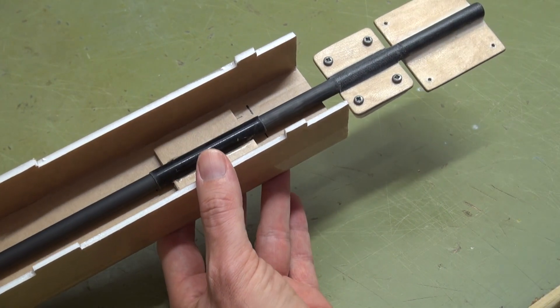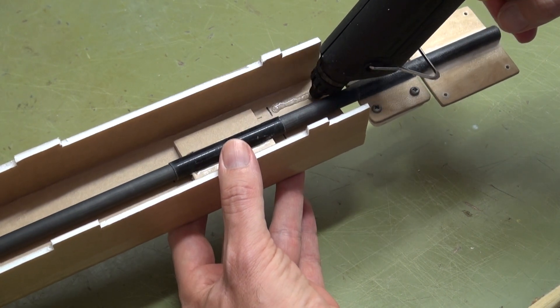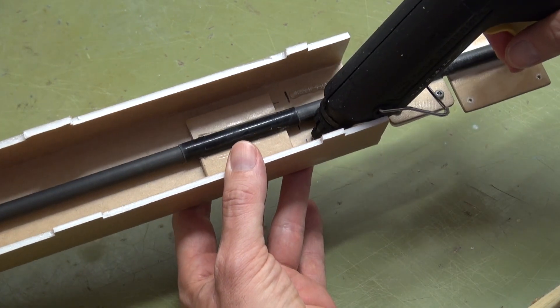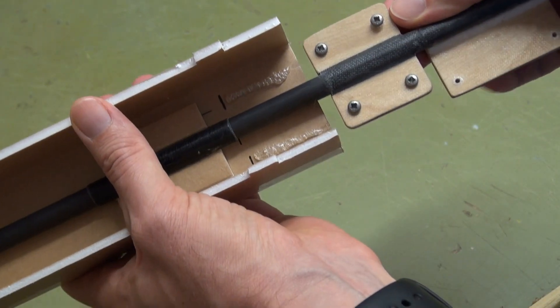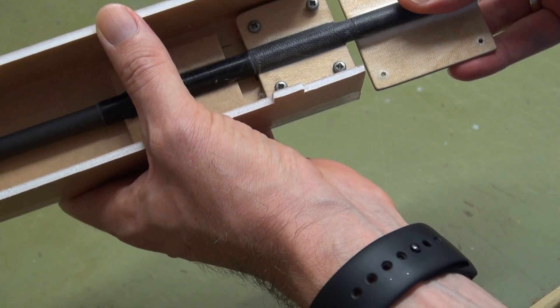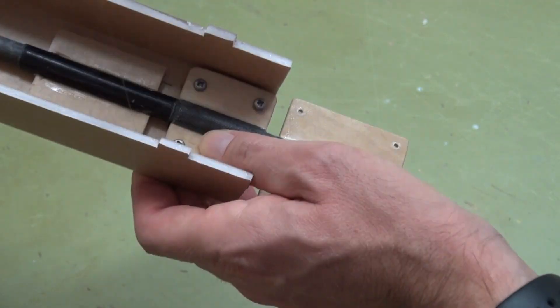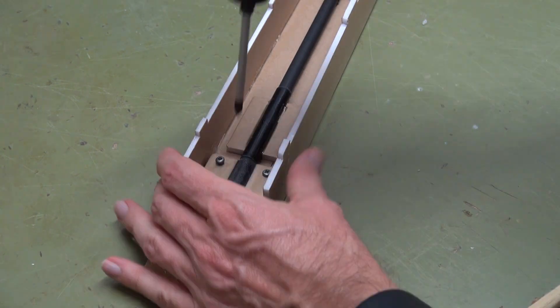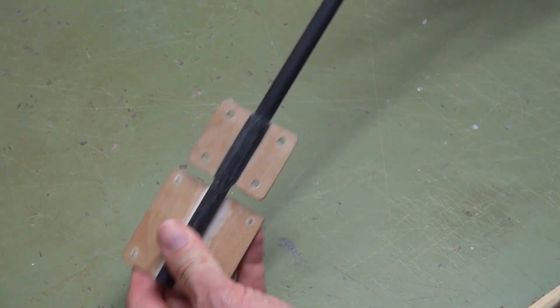If everything fits nicely, pull out the stick a bit and apply some hot glue to where the mounting base will be positioned. Slide the stick into the correct position. Remove any excess glue and let it dry. Remove the screws and pull out the stick.